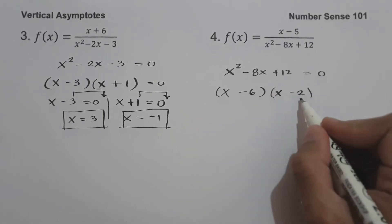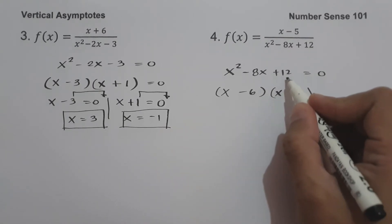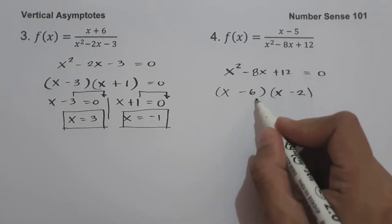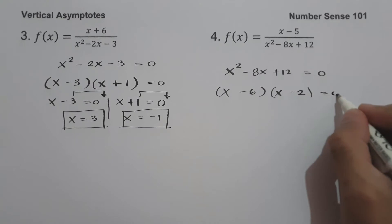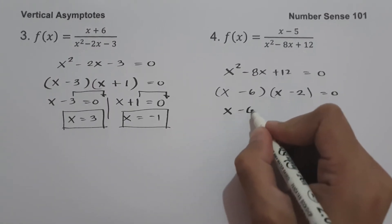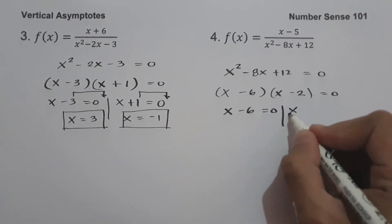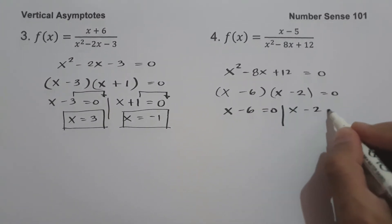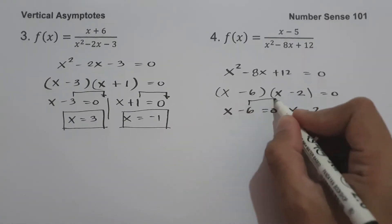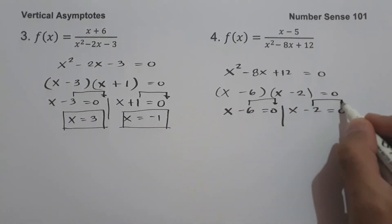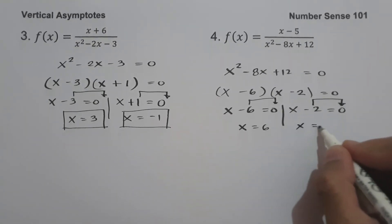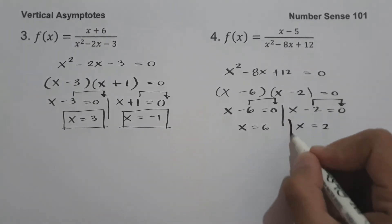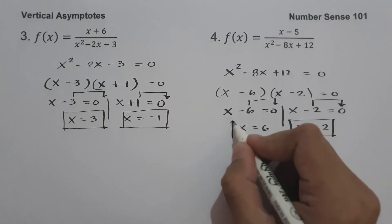Negative 6 multiplied by negative 2 is positive 12, and negative 6 plus negative 2 is negative 8. So let us equate x minus 6 equal to 0 and x minus 2 equal to 0. Moving the constants to the other side gives us x equals 6 and x equals 2. So these will be our vertical asymptotes.